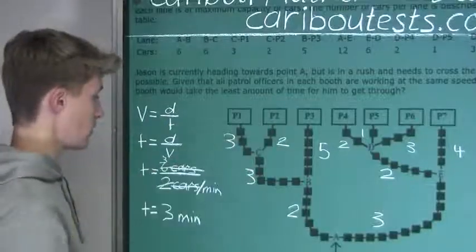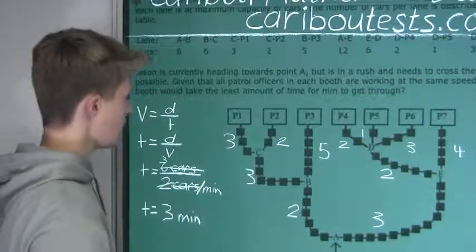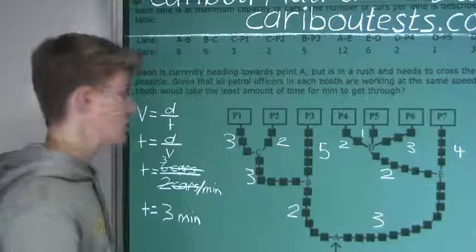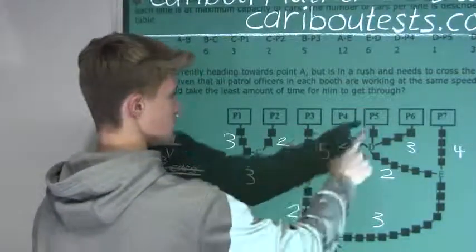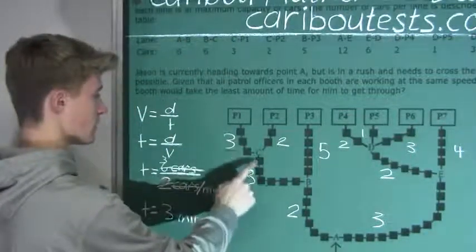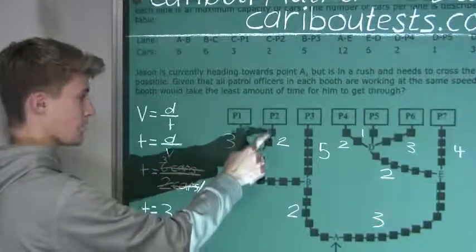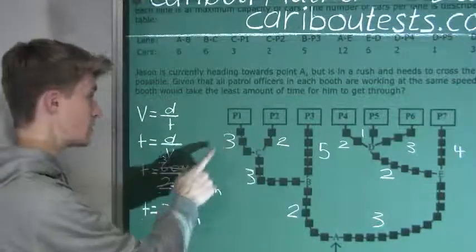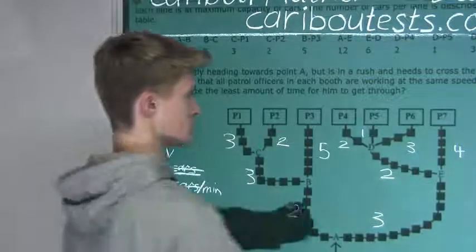So now we have all the times from each line. And now we only need to look at the booths P2, P3, P5, and P7 because, well, from this line, it splits up into these two booths. And this booth only has two, whereas this booth has three. So we only need to look at P2. So we will write that here.